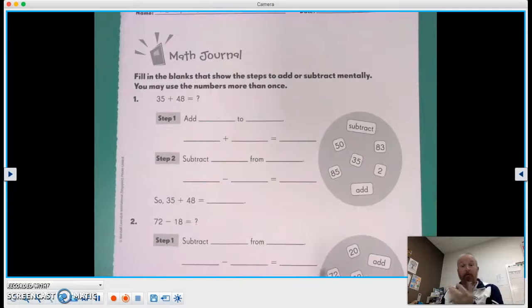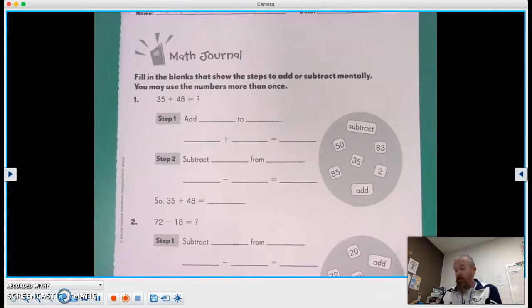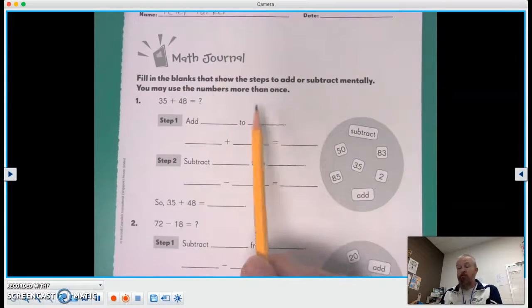We're gonna figure out mentally, but yet we're using paper, what our answer is. So we have 35, there's 50, 85, 83, two. And instead we can use the numbers more than once.